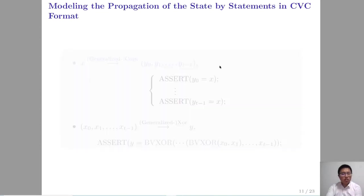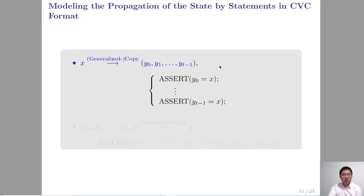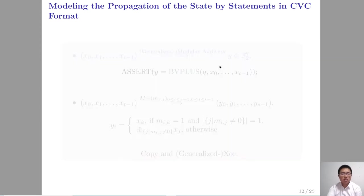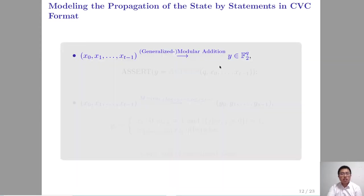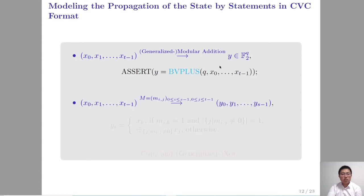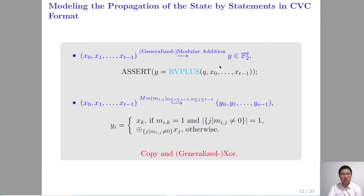The method for modeling the propagation of data through each operation is as follows. For generalized copy, it can be modeled directly. For generalized XOR, it can be modeled using the XOR function of STP. For generalized modular addition, it can be modeled using the neural addition function of STP. For binary matrix multiplication, it can be expressed in terms of copy and generalized XOR, and the modeling method can be deduced accordingly.